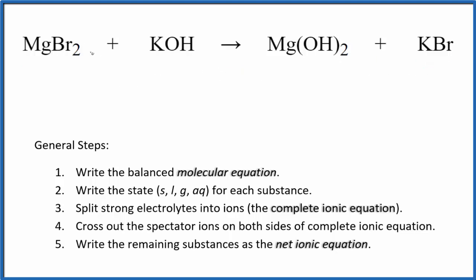It looks like I have two bromine atoms here and just one here, so I'm going to put a two as my coefficient. That balances the bromines. Now I have two potassiums, so let's put a two here. Those are balanced. Now I have two hydroxides. Over here I have two hydroxides, and then I have a magnesium on each side. That's the balanced molecular equation.